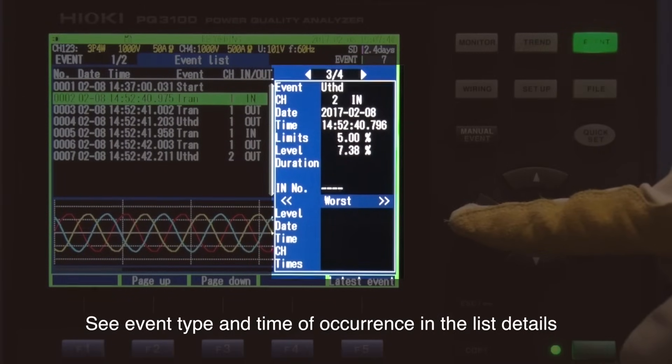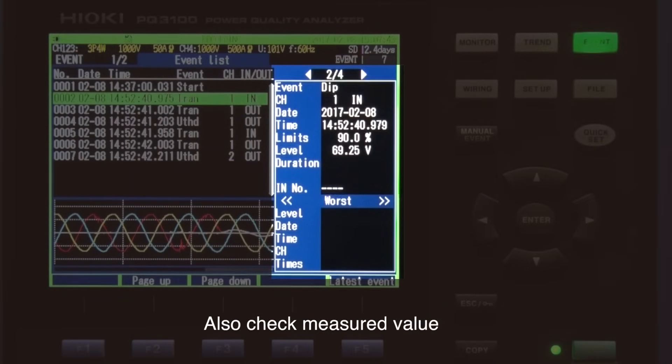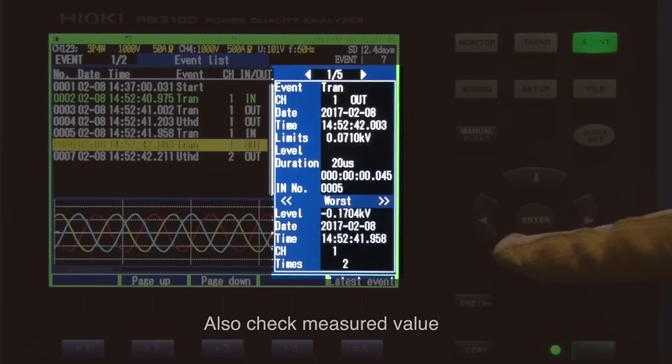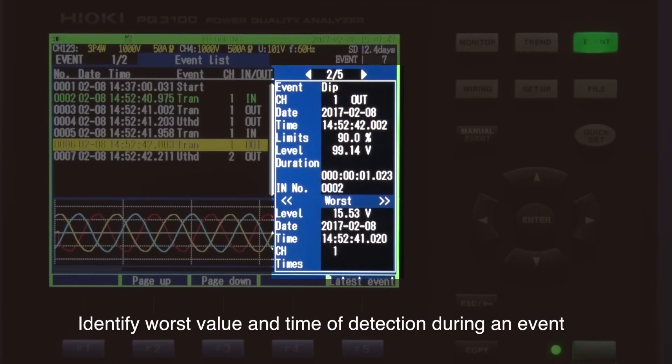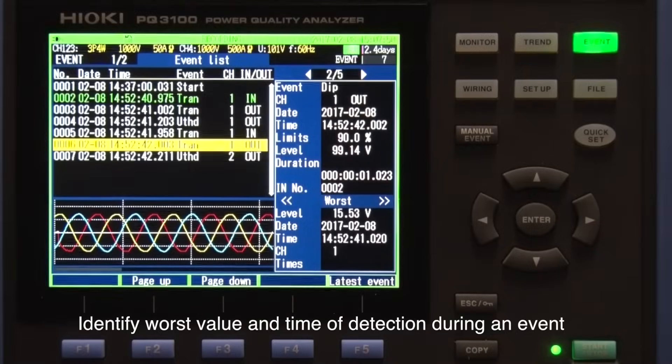View the event type, time of occurrence, and the measured value in the event list details. You can also identify the worst value and the time it occurred during an event.